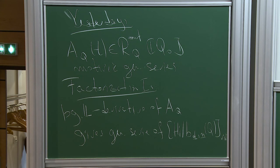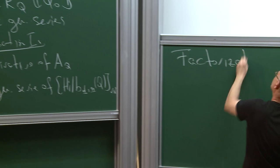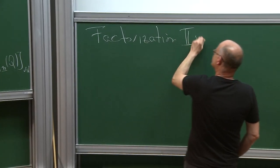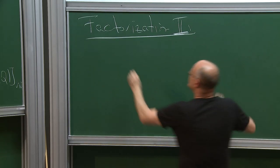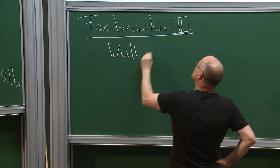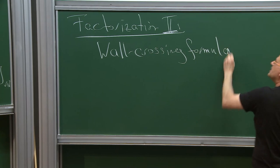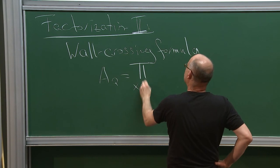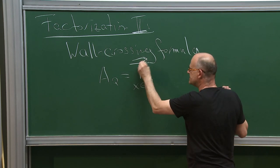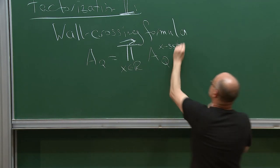In the question and answer session yesterday afternoon I almost gave the complete proof for this. Then we saw factorization two. Today I will mainly discuss factorization three. Factorization two was the wall crossing formula: A_Q admits a factorization as an ordered product over the reals in descending order of local series A_Q^{x,sst}.